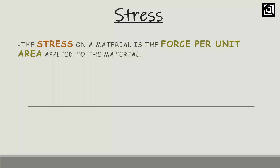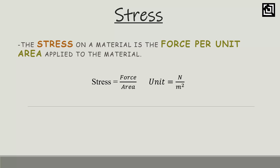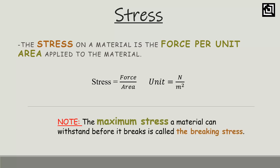Stress on a material is the force per unit area applied to the material. If we apply a force to a material, the formula is: stress is equal to force divided by area. The unit is Newton per meter square. An important factor is the maximum stress a material can withstand before it breaks, which is called breaking stress.